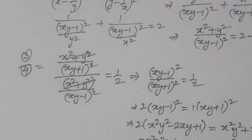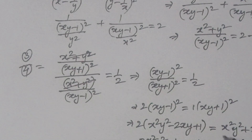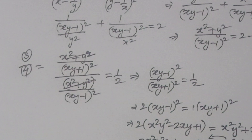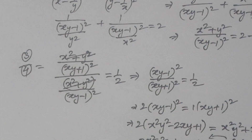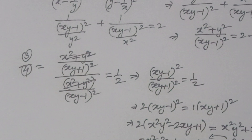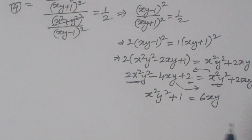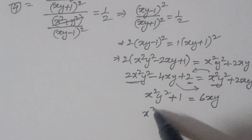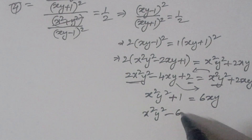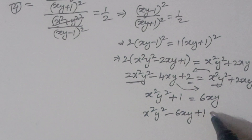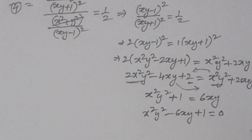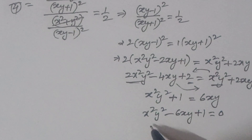Bringing all terms to one side: 2x^2y^2 - x^2y^2 + 2 - 1 = 4xy + 2xy, giving x^2y^2 - 6xy + 1 = 0. This is a quadratic in xy.